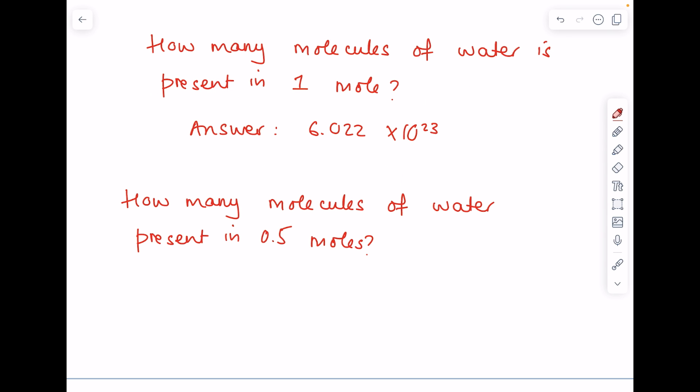What about if we ask ourselves how many molecules of water is present in one mole? Well the answer here would be 6.022 times 10 to the 23, i.e. Avogadro's constant. What about how many molecules of water are present in 0.5 moles? Well we just take Avogadro's constant and halve it. Our answer this time is 3.011 times 10 to the 23.